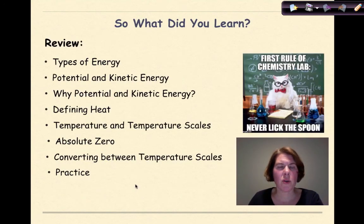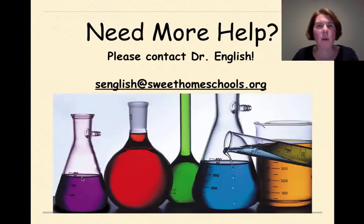So what did you learn in this tutorial? We went over different types of energy. We talked about the difference between potential and kinetic energy. We looked at why we need potential and kinetic energy on a very basic level. We defined the concept of heat. We looked at the definition of temperature and temperature scales. We talked about absolute zero and how to convert between temperature scales, specifically just Kelvin and degrees Celsius. And then finally, we did a little bit of practice at the end. Need more help? Feel free to contact me. Have a great day.